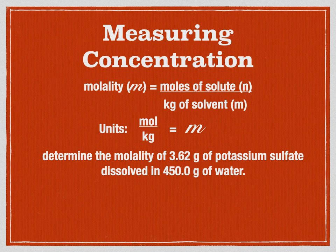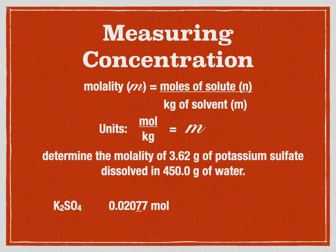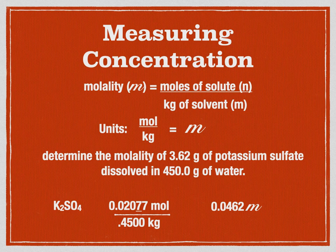Here's a problem: determine the molality of 3.62 grams of potassium sulfate dissolved in 450 grams of water. This is very similar to the last problem, except this time we're given a mass of solvent instead of a volume of solution. Since it's the same number of grams, we already know from the last problem that the moles are 0.02077. Dividing by 0.450 kg of solvent and rounding to three significant digits gives a 0.0462 molal solution.